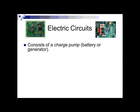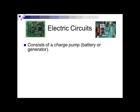Circuits consist of some sort of charge pump — that can either be a battery or a generator, and this depends on AC versus DC. There has to be some sort of source for this energy, and it has to have a complete loop.